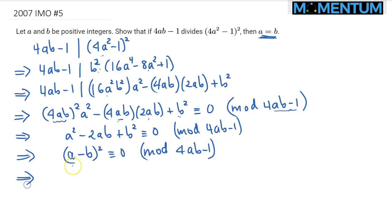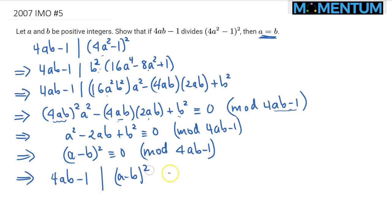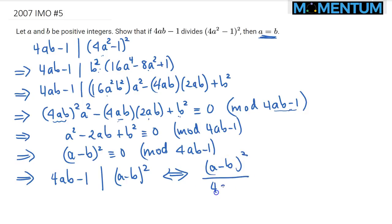And if you will, we can put it back into the language of divisibility. So that means 4AB minus 1 divides A minus B squared. Or if you will, we can rewrite this as: A minus B squared divided by 4AB minus 1 is an integer.